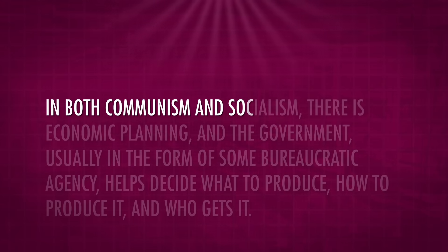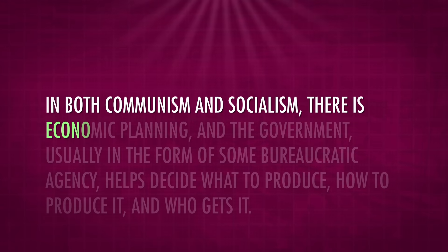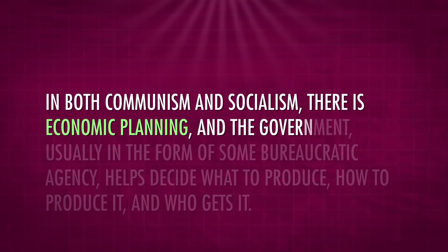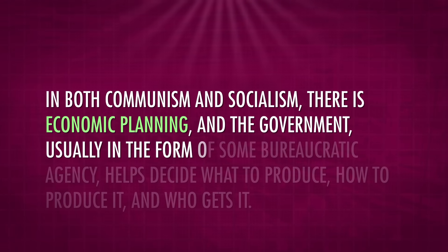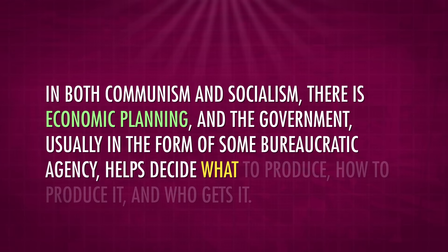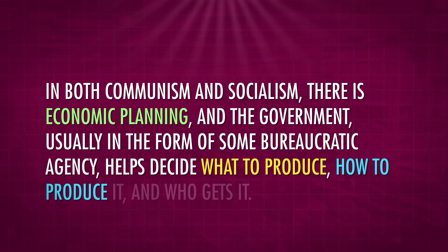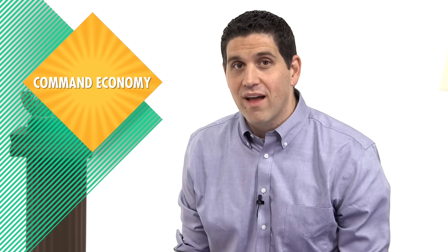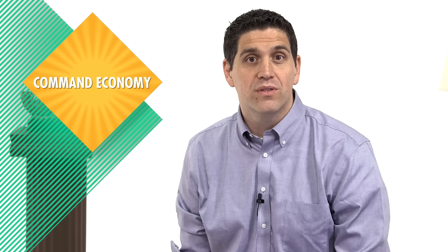Kind of like China and Cuba and the former Soviet Union, except not at all. In practice, no country has ever truly been communist, but there are a lot of countries that are socialist. Often, socialism has both private property and some public ownership and control of industry. The goal is to meet specific collective objectives and to provide free and equal access to things like education and healthcare. In both communism and socialism there is economic planning, and the government — usually in the form of some bureaucratic agency — helps decide what to produce, how to produce it, and who gets it. If an economy is completely controlled by the government down to the number of shoes that should be produced, that's called a command economy.